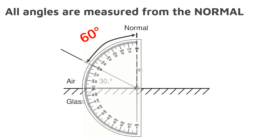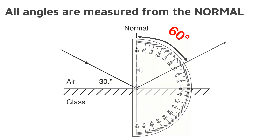Let's look at it a second time. In order to measure the angle of incidence, we put the zero line on the dotted line — the normal — and we put the curve of the protractor pointing towards the ray. To draw the reflected ray, we put the curve of the protractor towards the reflected side.